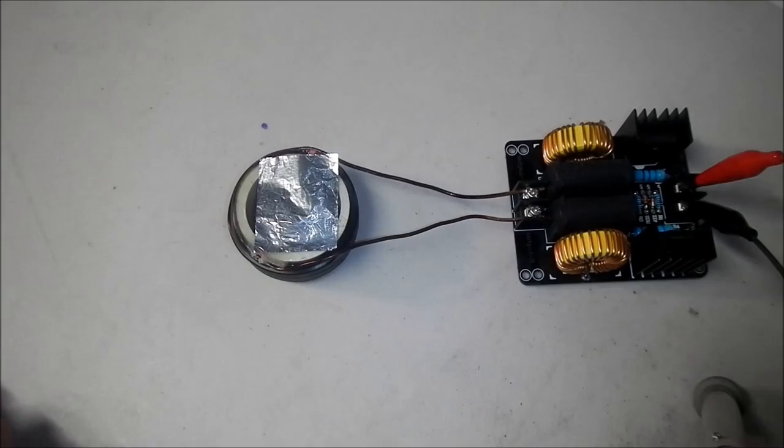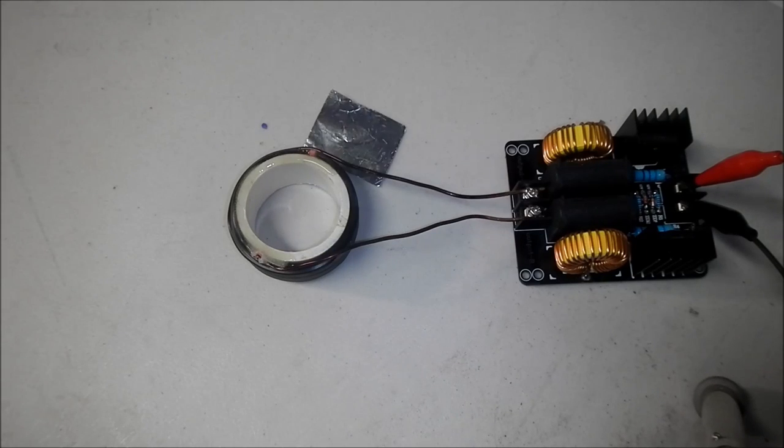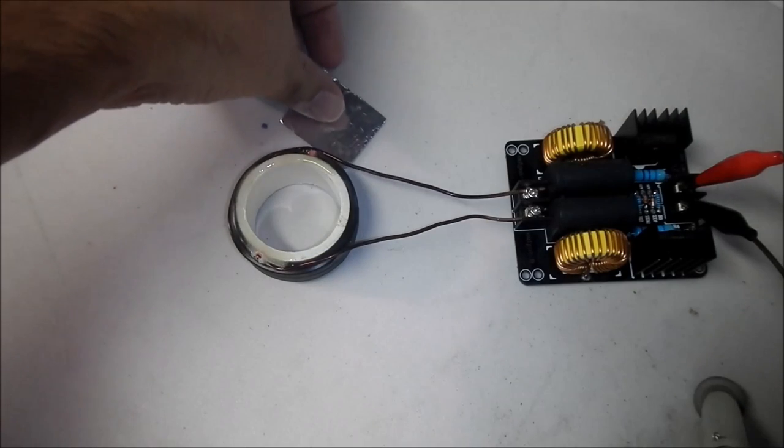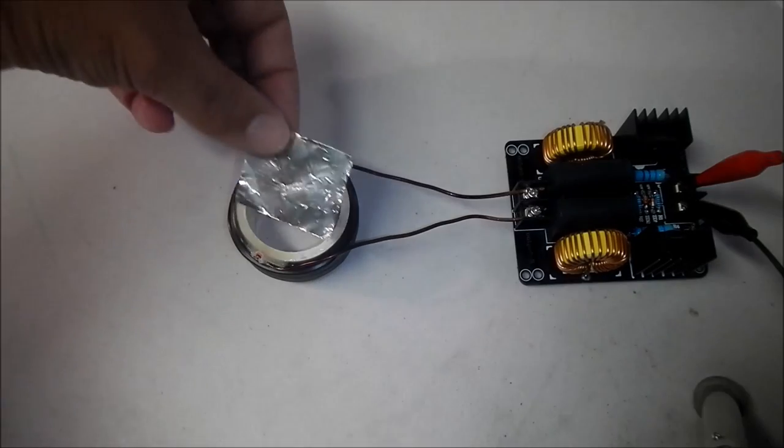So here's a smaller piece of aluminum. It's going to be repelled by the electromagnet. Try that again.